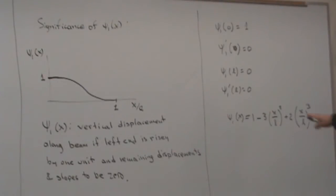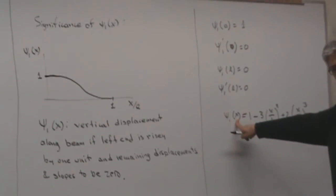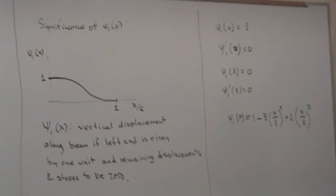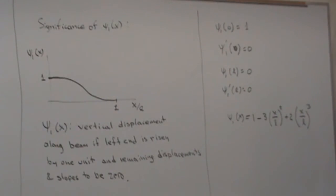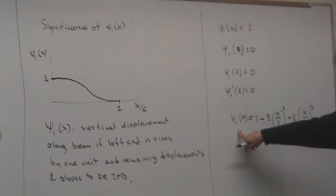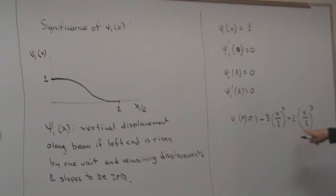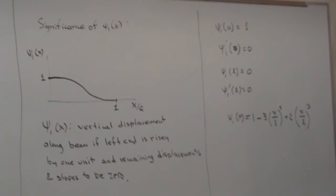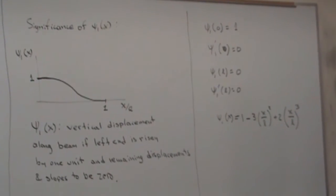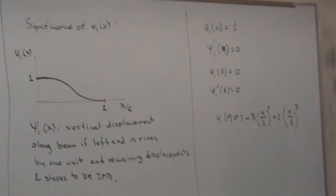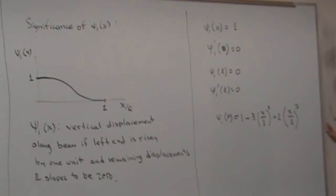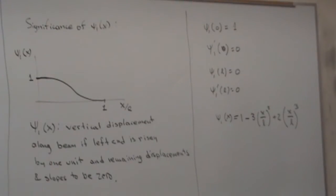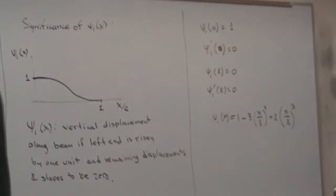To verify: putting x = 0 gives 1 − 0 + 0 = 1, as expected. Putting x = L gives 1 − 3 + 2 = 0, correct. You can do the same checks for the slopes to verify all boundary conditions are satisfied. That is the first mode shape. We have a total of 4 mode shapes.